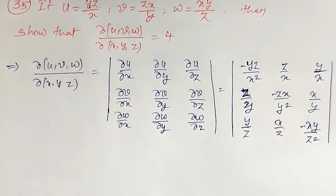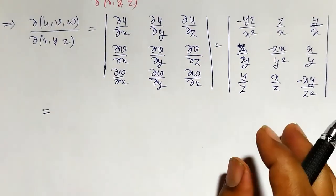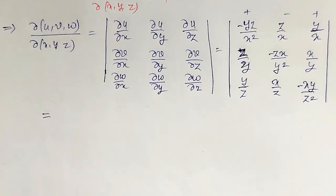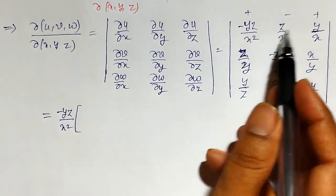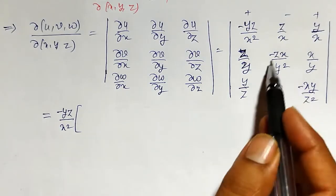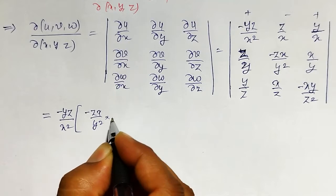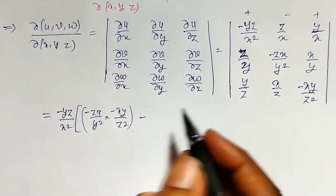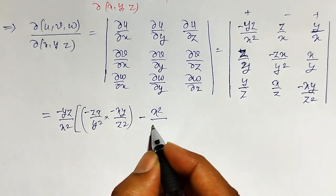Now we have to evaluate this determinant. As a general method, we expand along the first row with alternating signs plus, minus, plus. The first element is −yz/x², expanded with the 2×2 minor leaving that row and column: the product (−xz/y²)(−xy/z²) minus (x/y)(x/y), giving terms in the minor to be simplified.